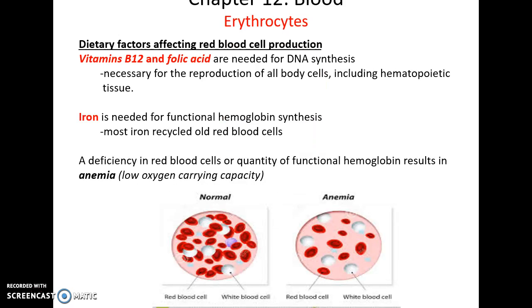There are various dietary factors that influence blood cell production. You need adequate amounts of vitamins B12 and folic acid, which are important for DNA synthesis. So even though the red blood cells lack a nucleus, the nucleus needs to be present during the production process. You also need iron, which is needed for functional hemoglobin — if you don't have iron, hemoglobin can't bind to oxygen.